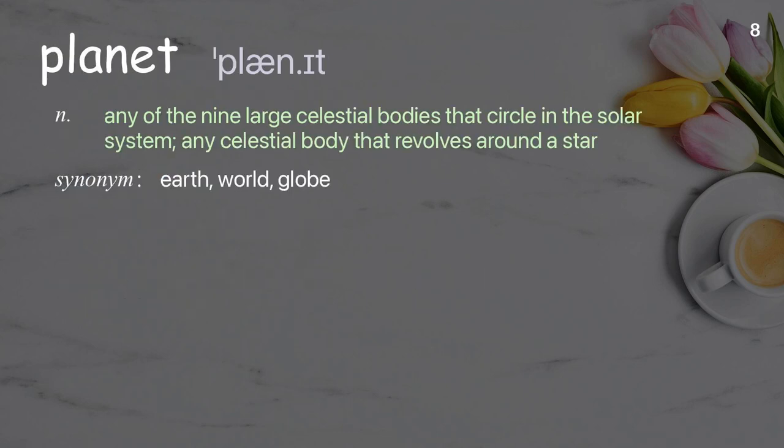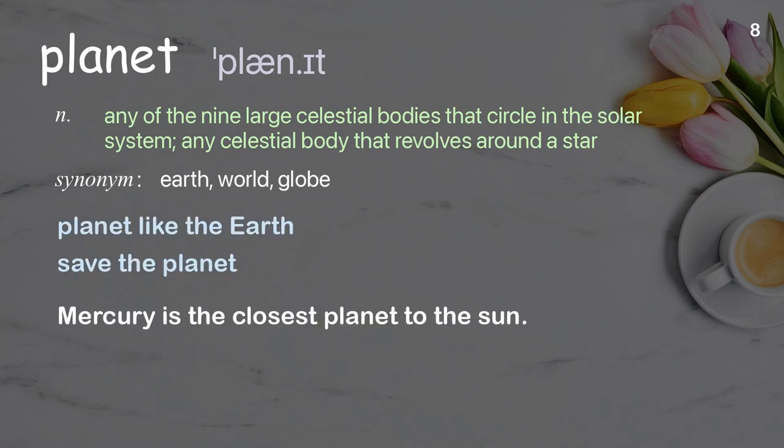Planet: any of the large celestial bodies that circle in the solar system; any celestial body that revolves around a star. Examples: planet like the Earth, save the planet. Mercury is the closest planet to the sun.